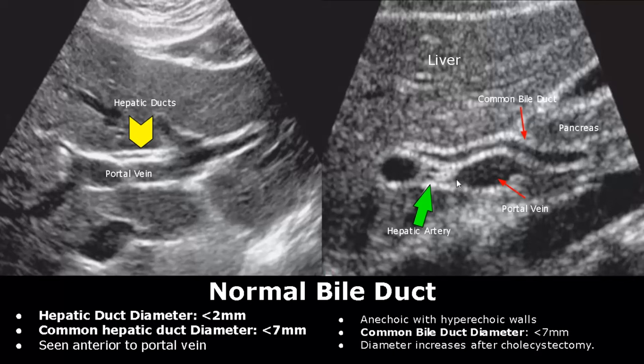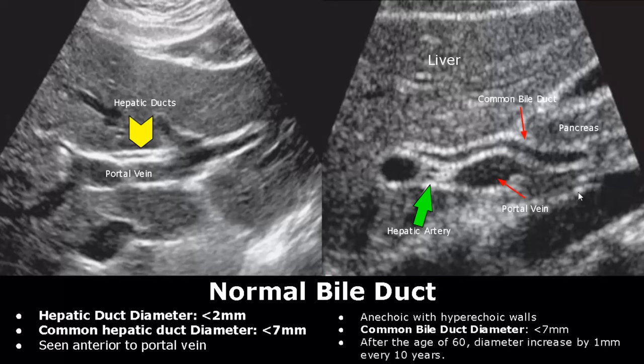We see the hepatic artery in cross section here. After a cholecystectomy — that is, gallbladder removal — the diameter will increase. After the age of 60, the diameter starts to increase by one millimeter every ten years.